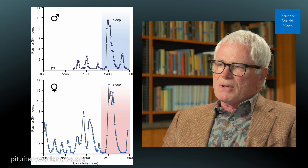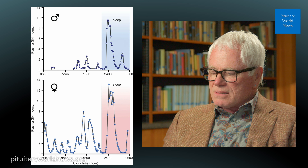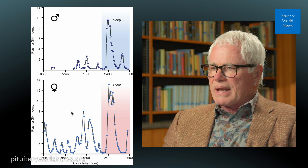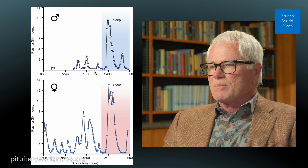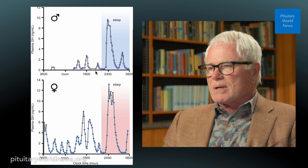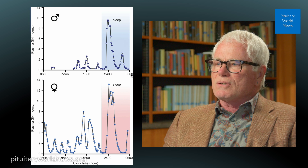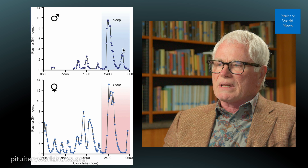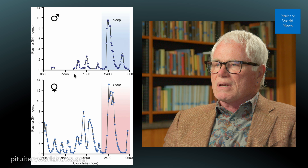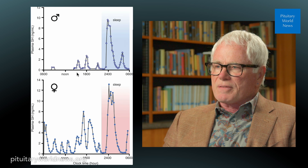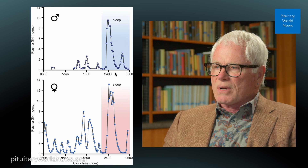Pituitary hormones are secreted in a pulsatile fashion. This is an example of growth hormone secretion — the top panel is in a man and the bottom panel is in a woman. Most of our pituitary hormones are secreted in pulses, varying from 8 to 12 a day, sometimes 14 to 16, and sometimes greater when you're younger and growing. Growth hormone is usually secreted at night — most of the growth hormone an adult makes is secreted while sleeping. In fact, 50% of adults would have an undetectable level during the daytime when their blood is drawn, because most of it is secreted at night.